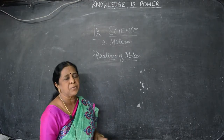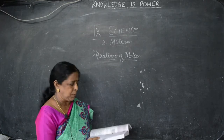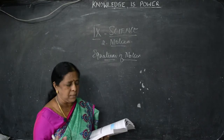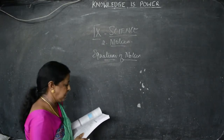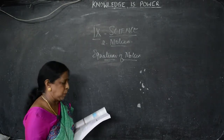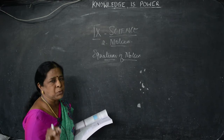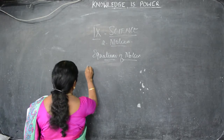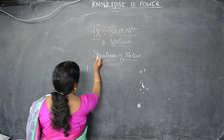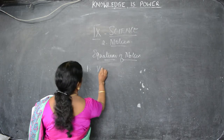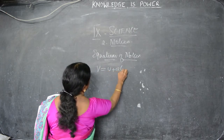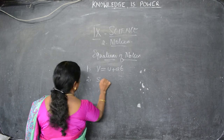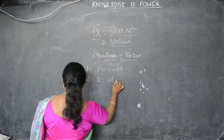Now we have to see what are the equations of motion. Newton studied the motion of an object and gave a set of 3 equations of motion. The first equation is v = u + at. The second equation is s = ut + half at squared.